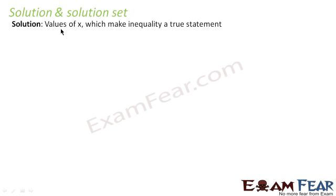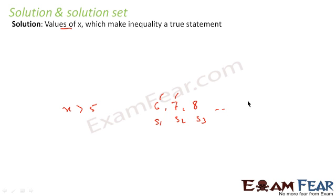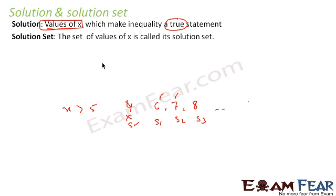A solution is any value of x which makes the inequality a true statement. For example, for x is greater than 5, solutions can be 6, 7, 8, and so on — we can have infinitely many solutions. Note that 4 is not a solution because x greater than 4 would make the statement false when x equals 4. So a solution is any individual value of x that makes the inequality true.